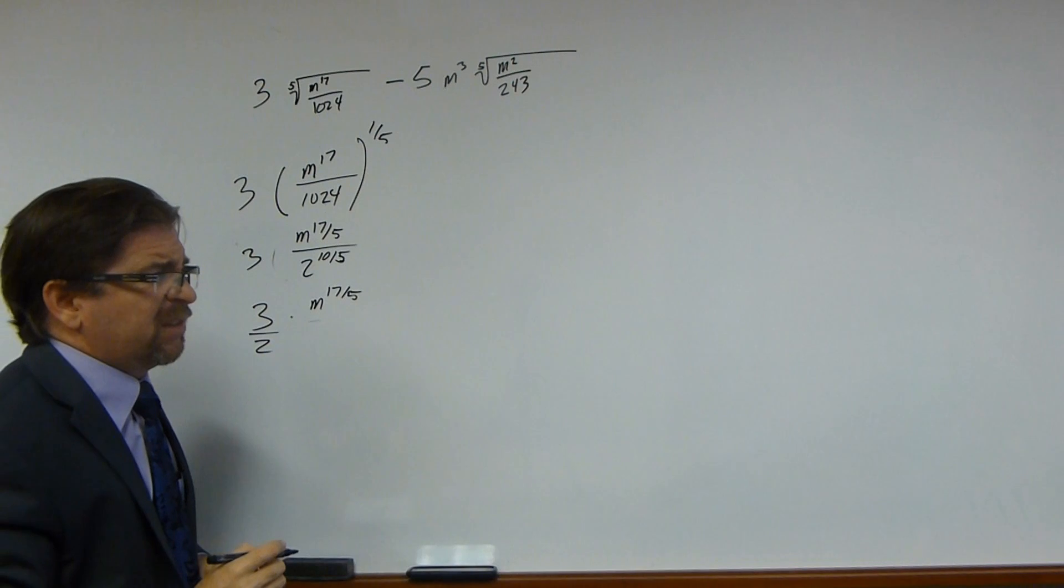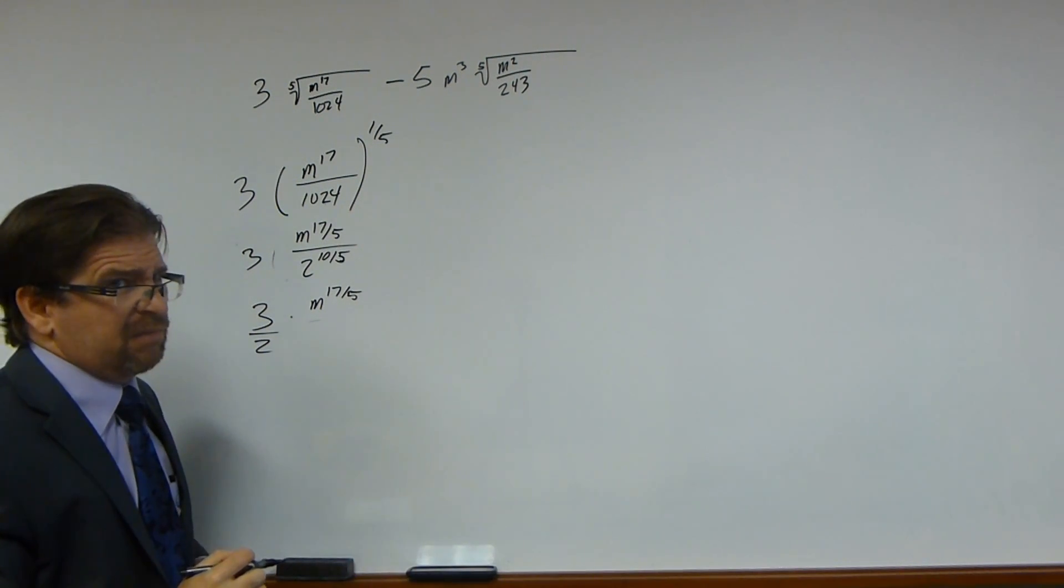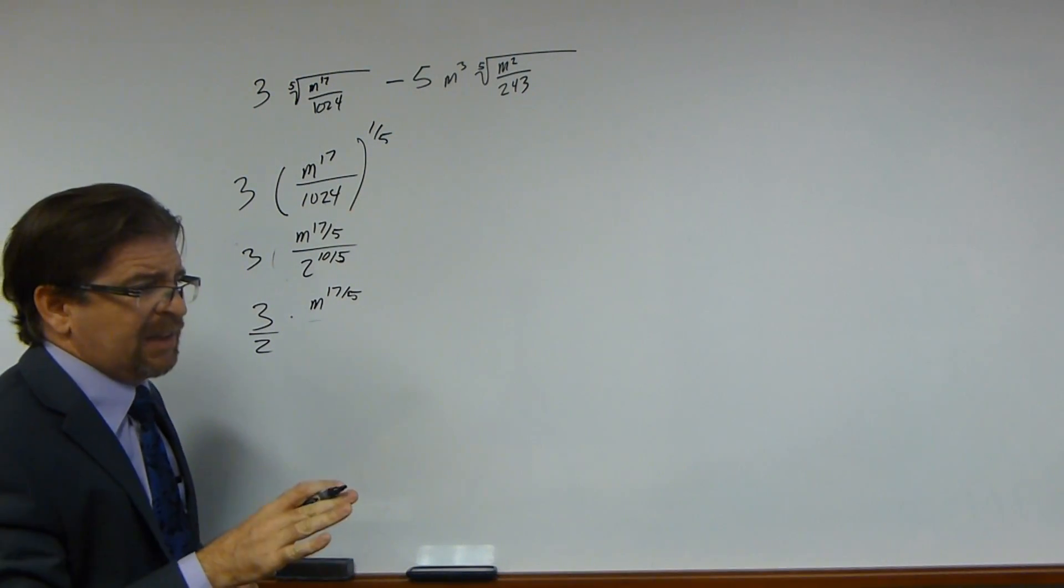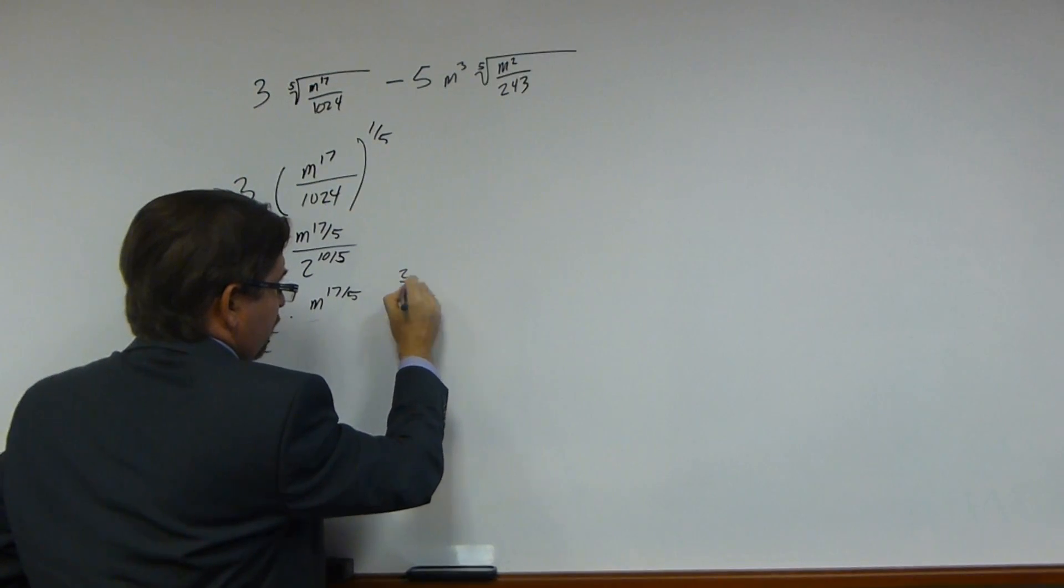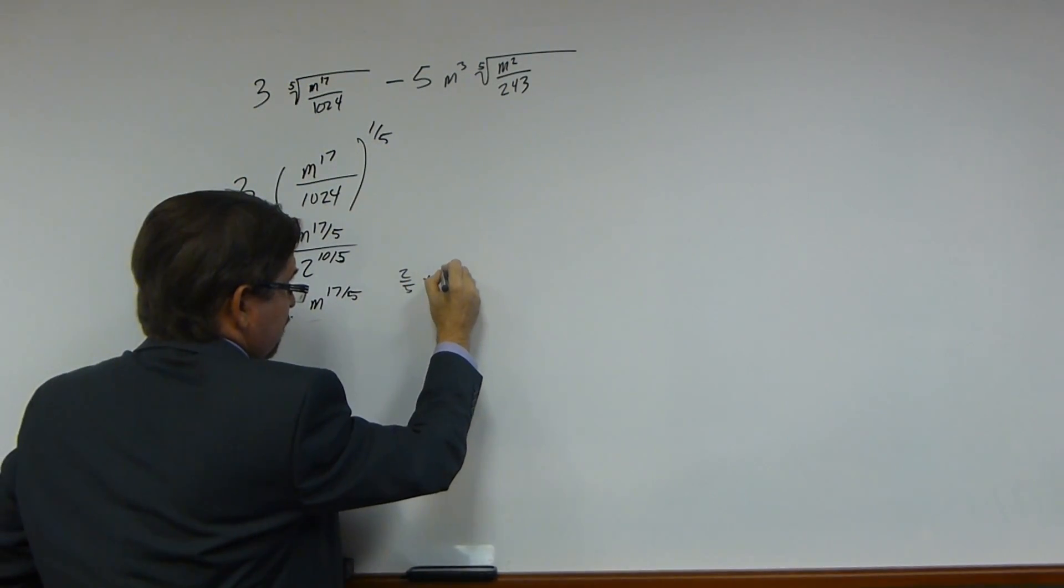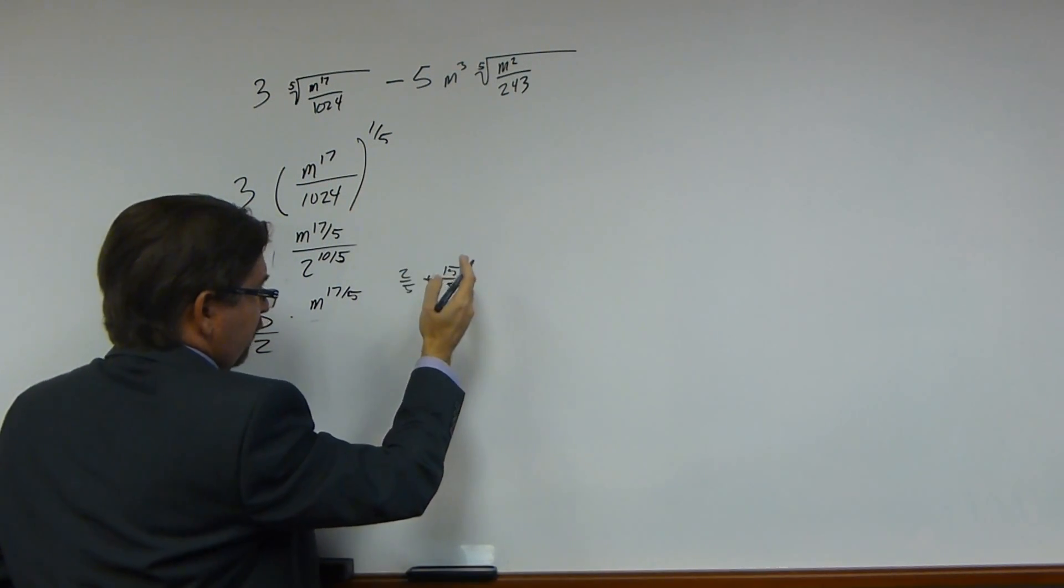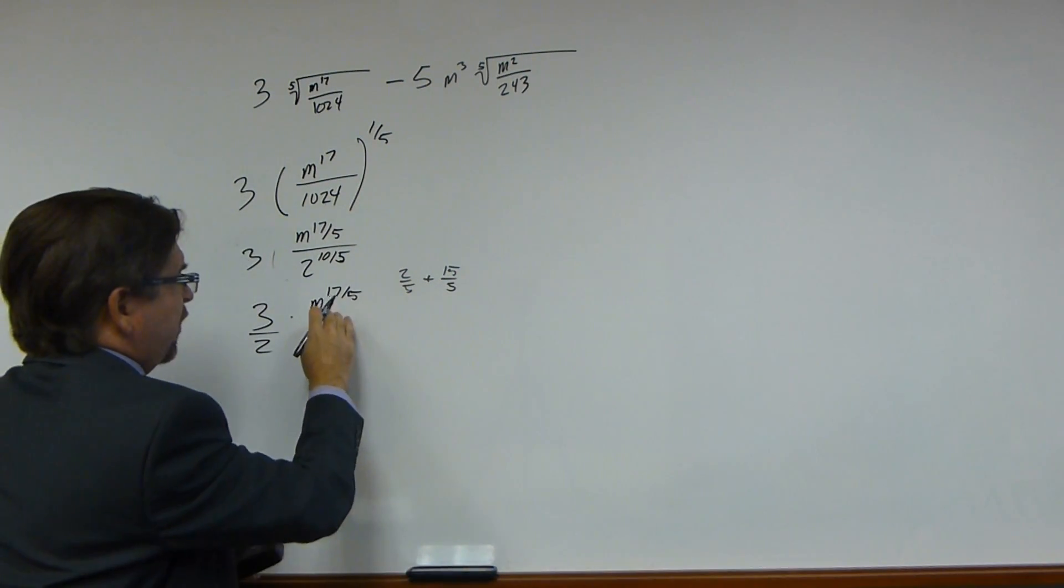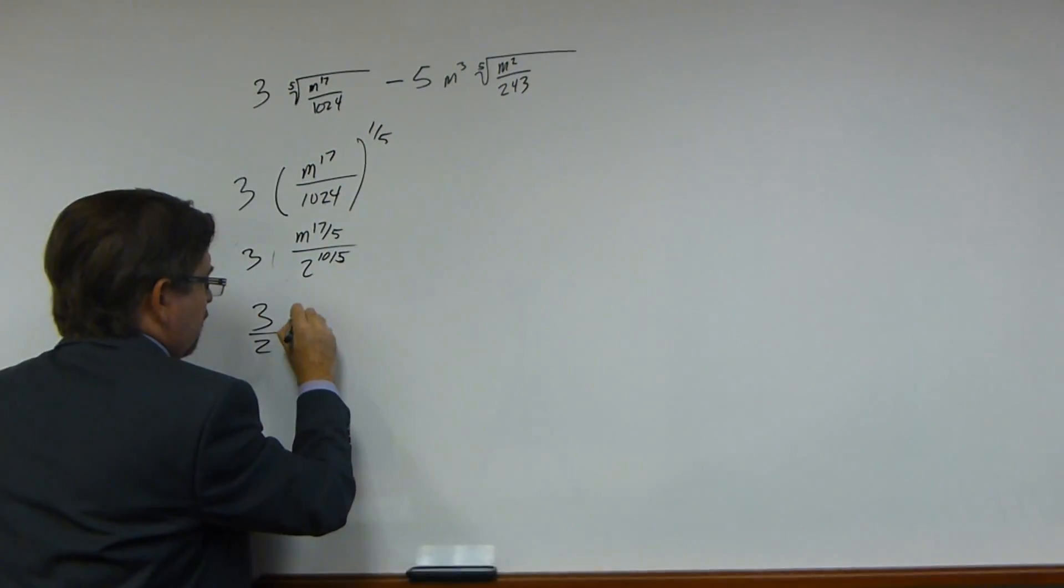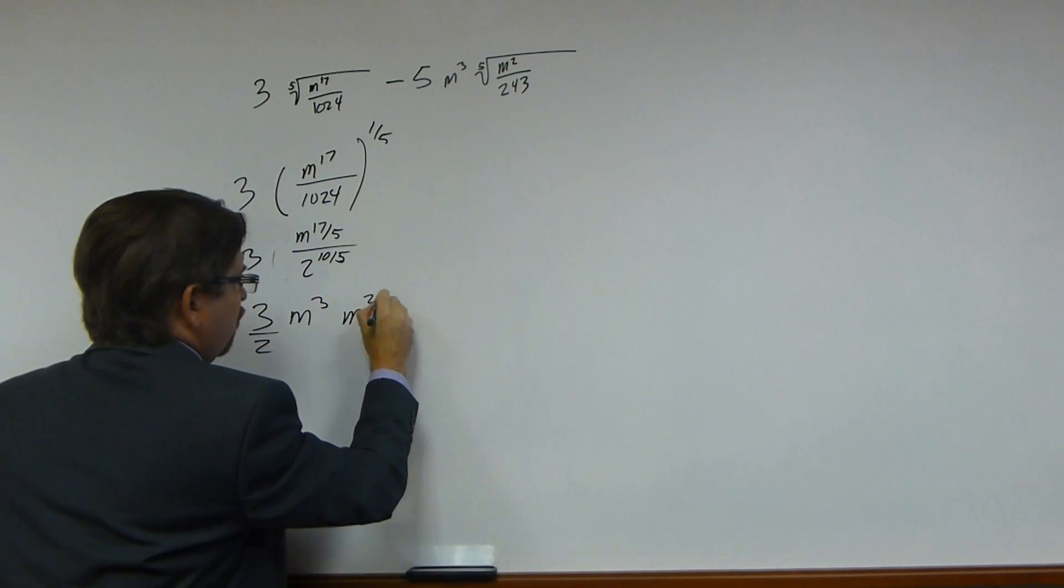17 divided by 5, what is that? That's going to be 3 and 2 fifths. Don't feel bad at taking a moment and working that out. That's going to be 2 fifths plus 15 fifths. 15 is 3 times 5, so this becomes m to the 3rd power, m to the 2 fifths power.